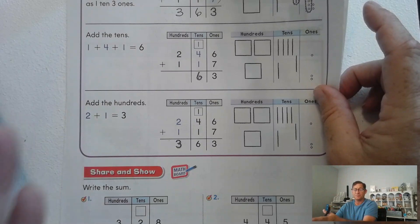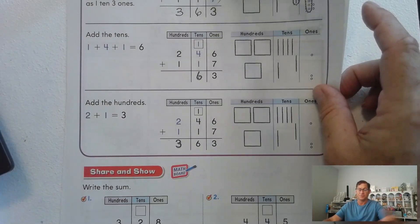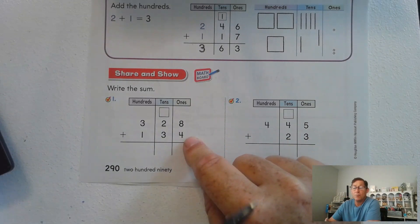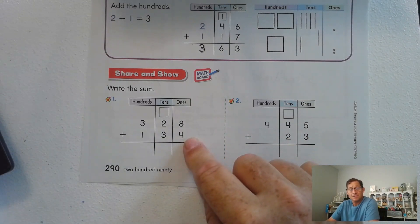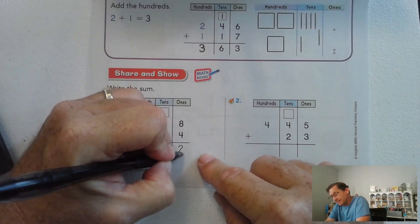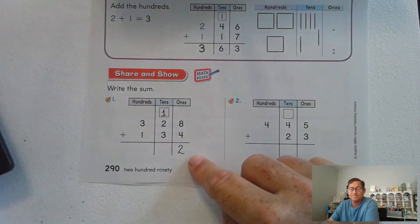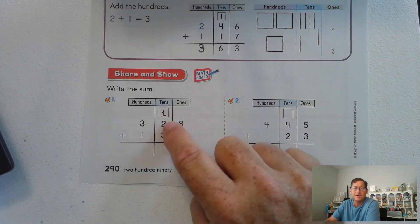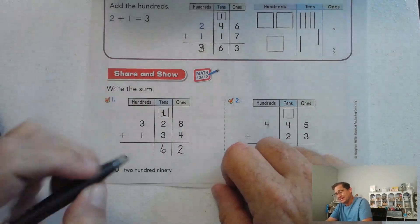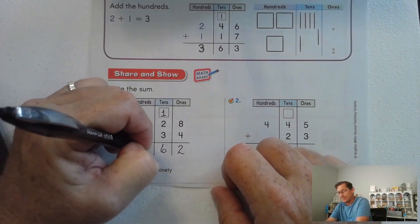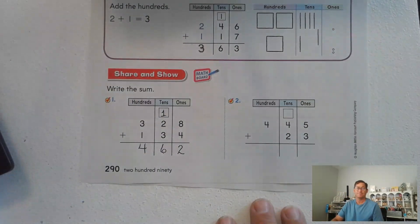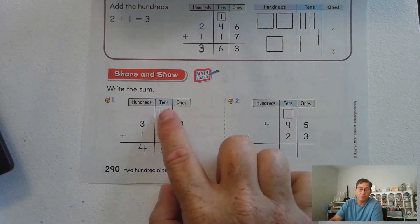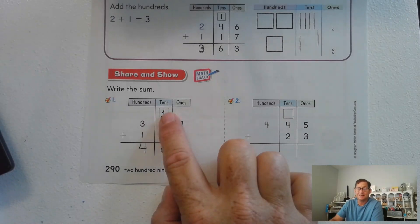Let's start the next problem. Eight ones and four ones — that's twelve ones, so we regroup that as one ten and two ones. Now add the tens: three tens plus two tens plus one ten — two and one is three tens, three tens and three tens is six tens. Then 300 plus 100 is 400. Three-digit addition is no different than two-digit addition: if we need to regroup, we regroup the ones as tens.